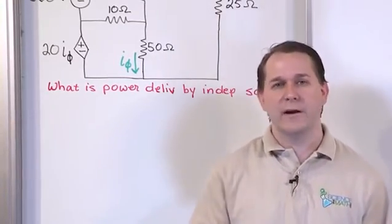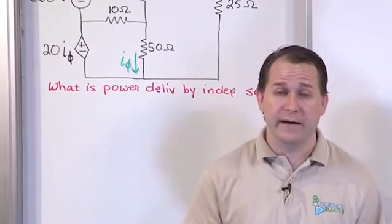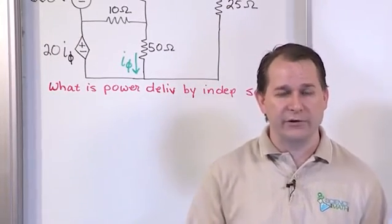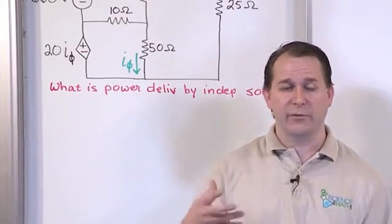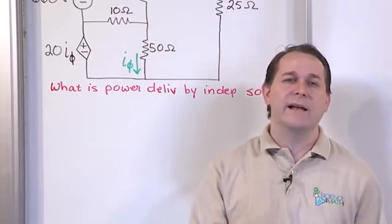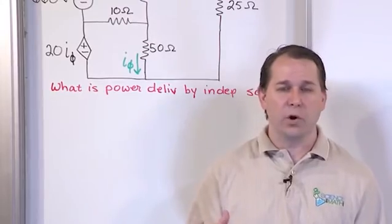When you get done, you're going to find that you don't have enough equations to actually solve it. So you'll need to write a constraint equation that involves your dependent source variable, whatever it is in your circuit. That's how this will work for every problem.